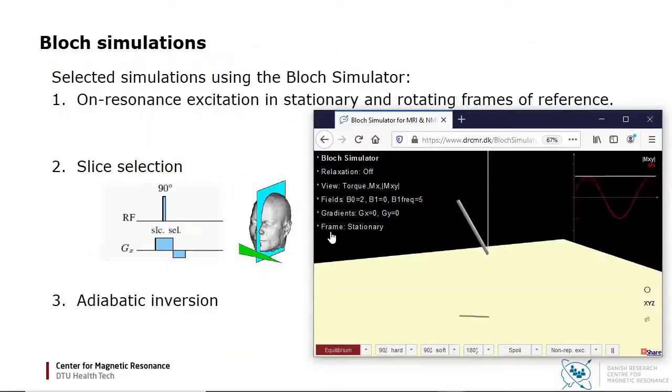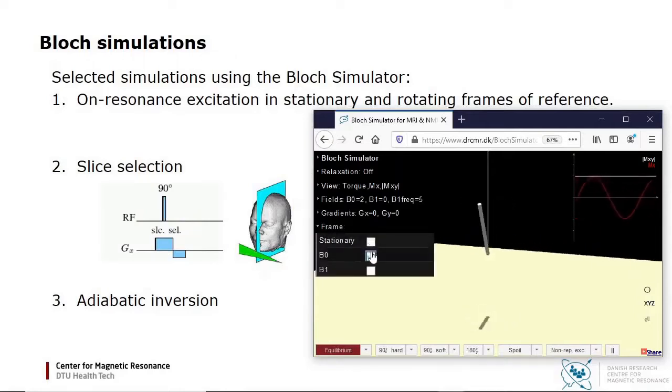Here you see precession once again. Let's change to a frame of reference rotating at the Larmor frequency. You still see the precession, but from a different point of view. This is reflected in the rotation of the floor. In this rotating frame of reference, the magnetization is now stationary, so the B0 field appears to be transformed away.